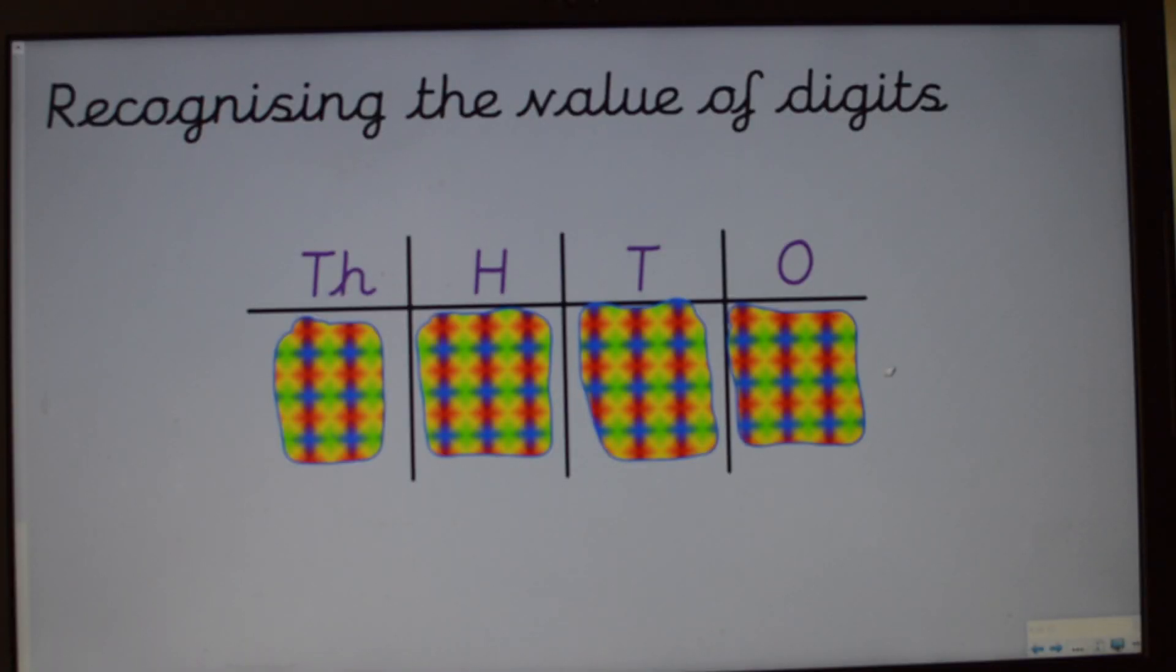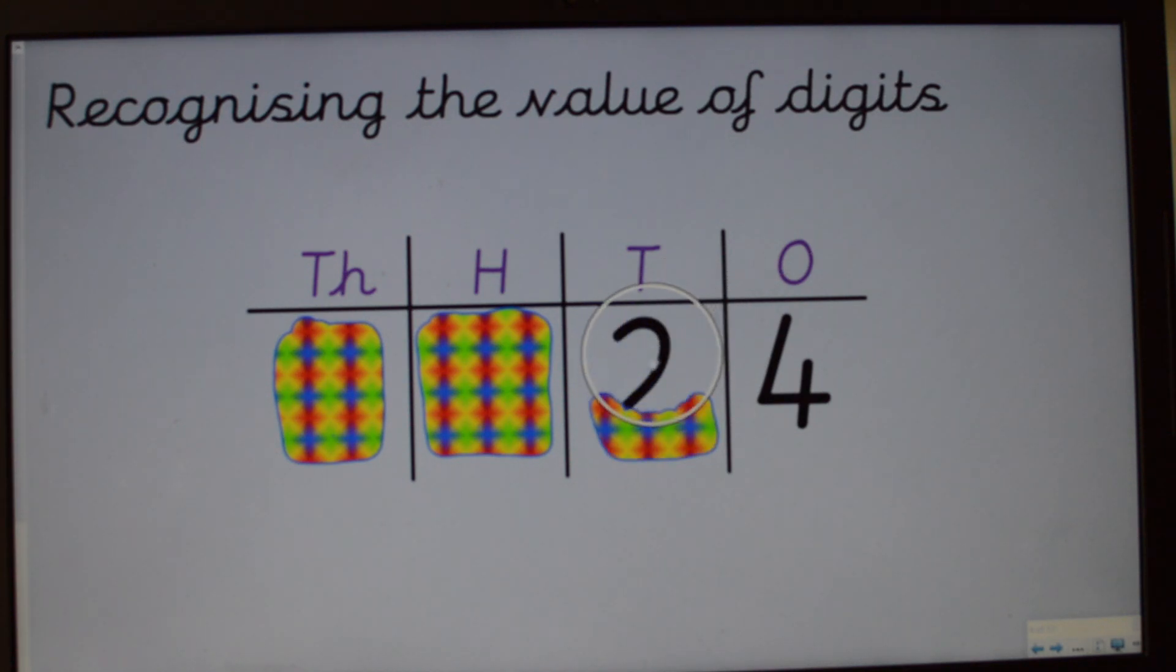Okay, now I'm sure you've all seen a place value grid like this before. At the top here, we can see we've got thousands, hundreds, tens and ones. If I remove here, we can see that we have got four ones. If I remove the next column, I've got two tens and four ones, and that makes 24. Let's remove the next number. Right, eight hundreds, two tens and four ones. What does that make? Eight hundred and twenty-four, you're right.